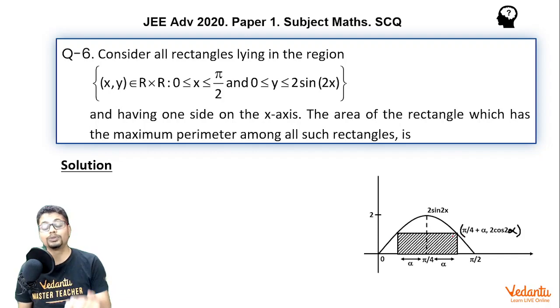Of course, these two vertices can't lie above the curve because the rectangle is supposed to lie entirely in this region. Now since this curve y equal to 2sin(2x) is symmetric about x equal to π/4, if one vertex is α units right of x equal to π/4, another vertex would be α units left of x equal to π/4. And they will have the same y coordinate.